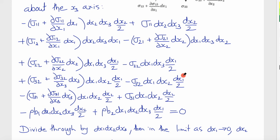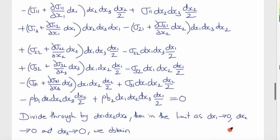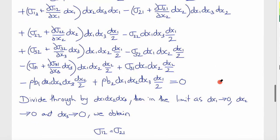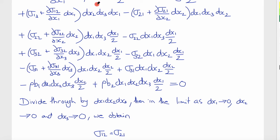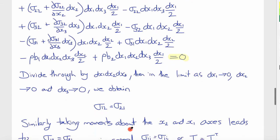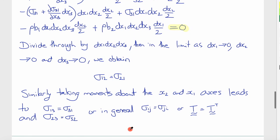So there's the big ugly expression we get for the moment balance. Now we'll divide through by dx1 dx2 dx3 and take the limit as dx1 tends to 0, dx2 tends to 0, and dx3 tends to 0. And what that does is get rid of just about everything except σ12 and σ21. So it leaves us with σ12 minus σ21 equals 0, or σ12 equals σ21. And similarly, if we take moments about the x2 and x1 axes, these will lead to σ13 equals σ31, and σ23 equals σ32. Or in general, σij equals σji.